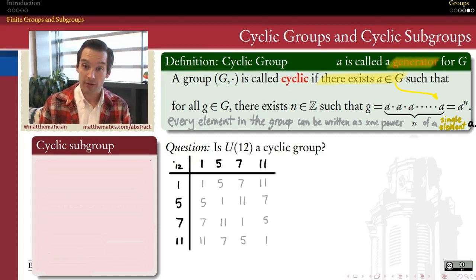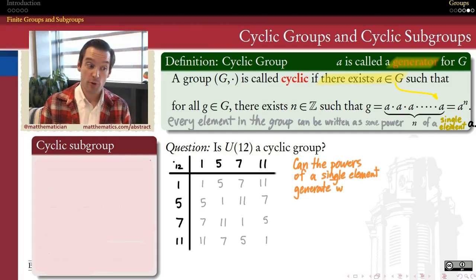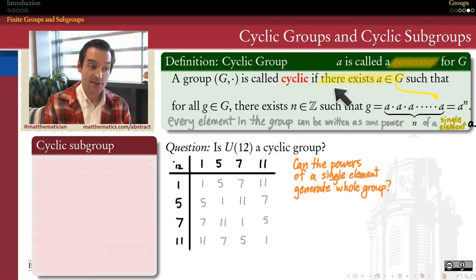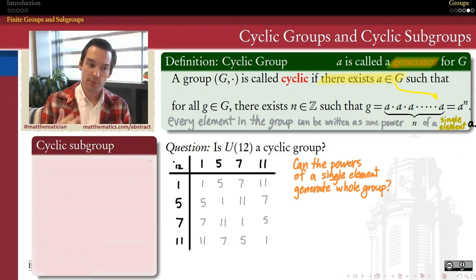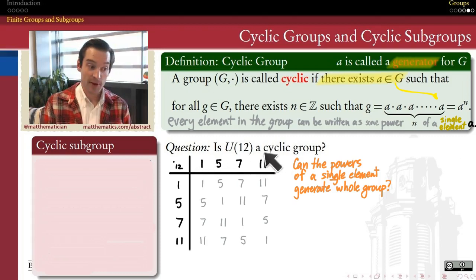Let's take the group U12, the multiplicative group of units mod 12. Is this group a cyclic group? The question is decided by an existential claim: does there exist an element in this group whose powers give us all of the elements? Is there a generator? Let's be really thorough and check each of the four elements of U12 — the residues mod 12 which have multiplicative inverses — to see if the powers of any single one of them can generate the entire group.